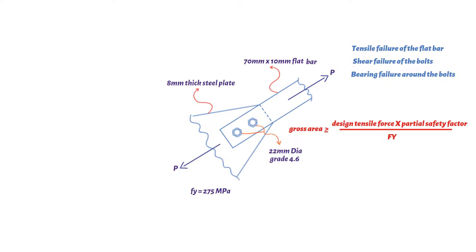Second equation is net area of section, which is equal or greater than design strength multiplied by a different partial safety factor divided by 0.9 divided by ultimate tensile strength. For regular S275, ultimate tensile strength equals 410 megapascals, and partial safety factor equals 1.1.